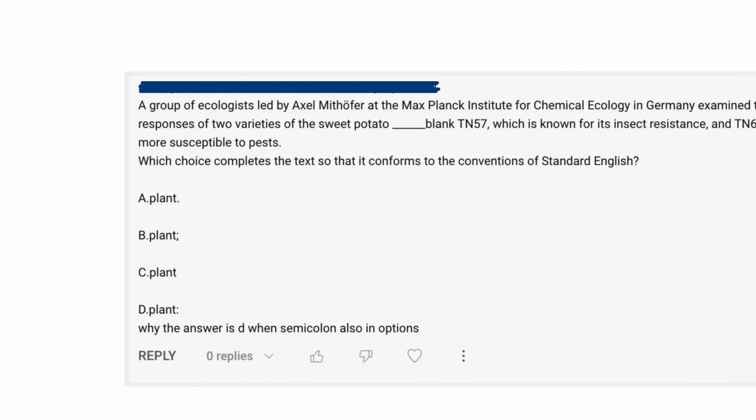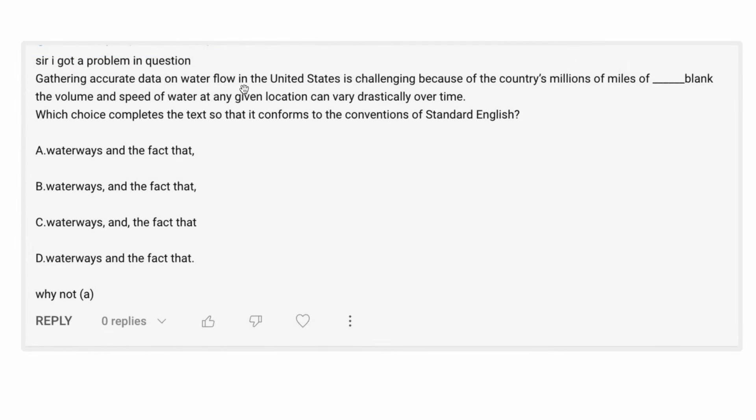Another example, which again, I'll have to shrink down. Gathering accurate data on water flow in the United States is challenging because of the country's millions of miles of blank. The volume and speed of water at any given location can vary drastically over time. Okay, so once again, I hadn't really looked at these other than just kind of gathering them together. But I'm going to say that we've got, well, this could have been another colon situation.